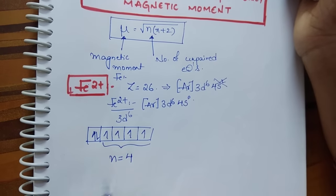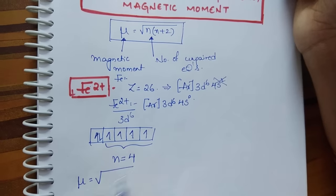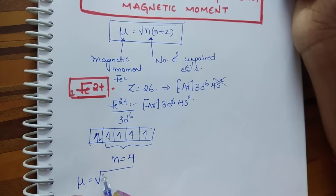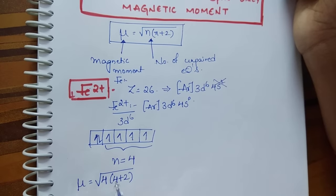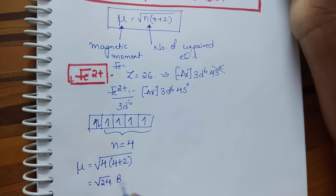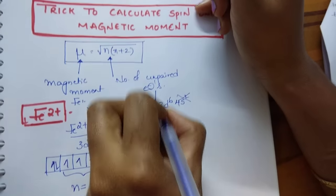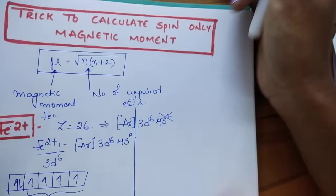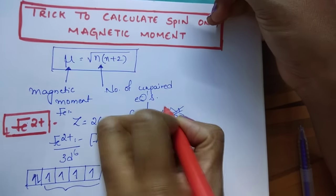If n value is 4, then magnetic moment μ equals square root of n into n plus 2. So 4 into 4 plus 2: 6, 4×6 is 24. Square root of 24. So it is square root of 24 Bohr magnetons.